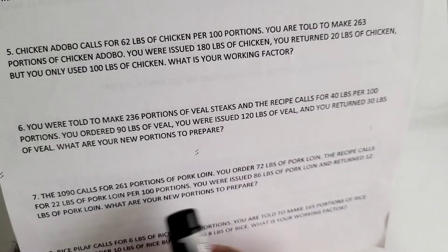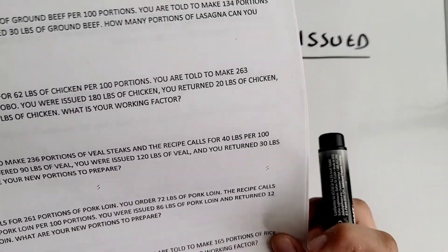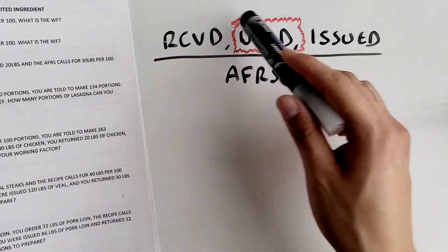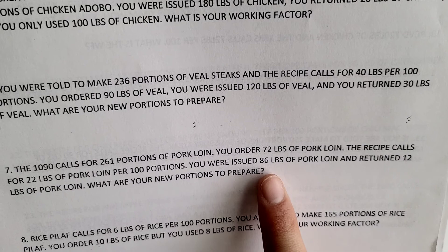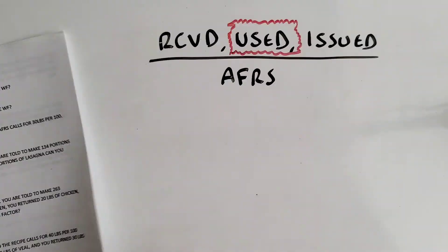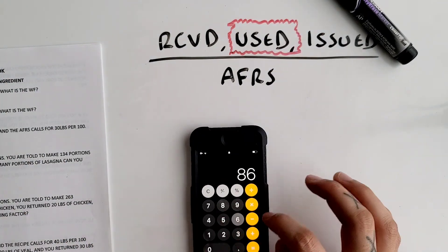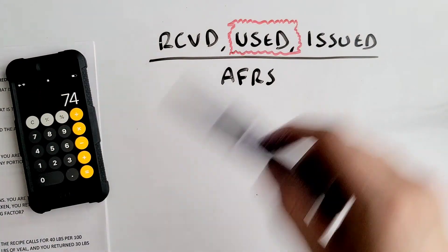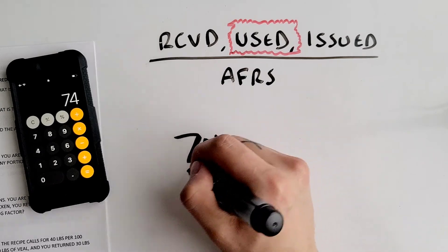Make sure you fully read the word problem before you start anything. The first thing you want to find is the top number — how much did you actually use? It says you were issued 86 pounds of pork loin and returned 12. So 86 minus 12 equals 74. You actually used 74 pounds.